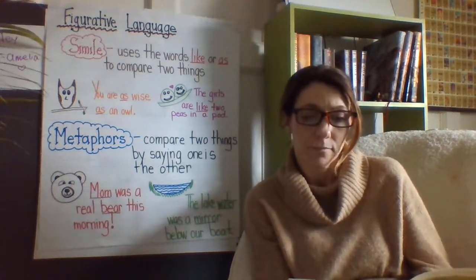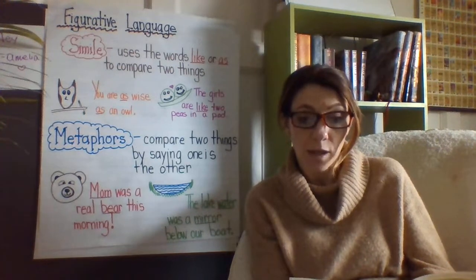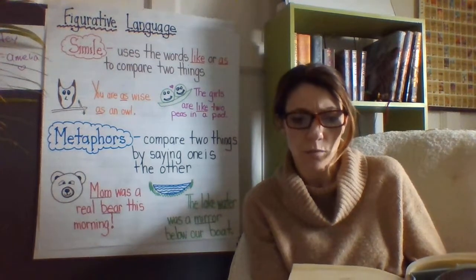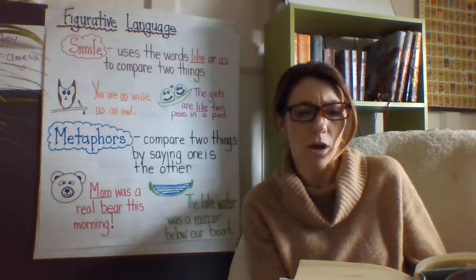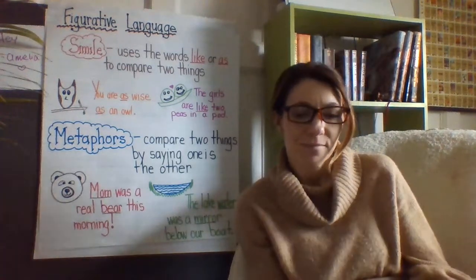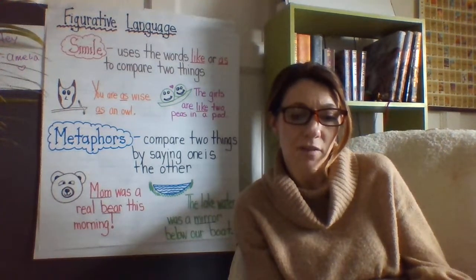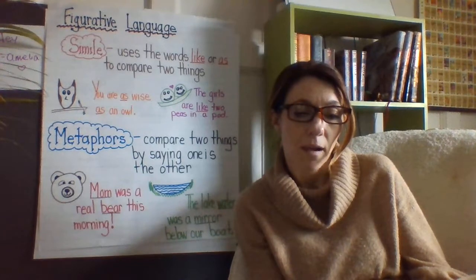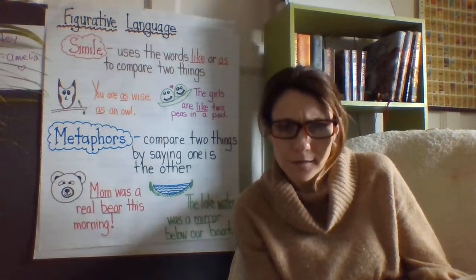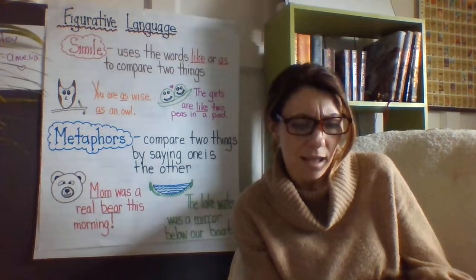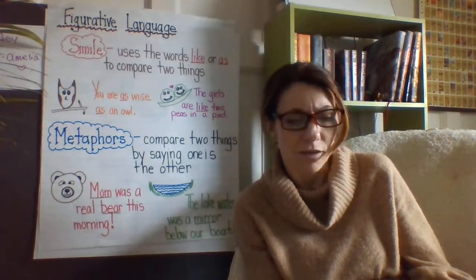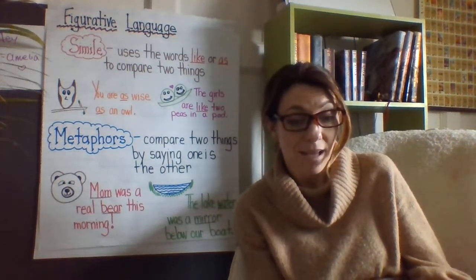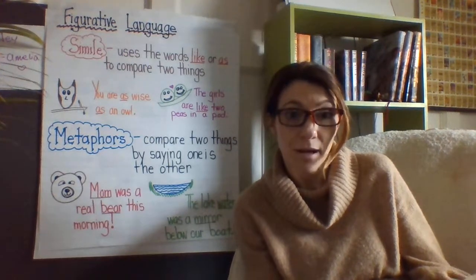'Once Stella saw a trainer hit a bull elephant with a claw stick. A bull is like a silverback — noble, contained, calm like a cobra is calm. When the claw stick caught in the bull's flesh, he tossed the trainer into the air with his trunk. The man flew like an ugly bird.' She never saw the bull again. There were a lot of similes and metaphors in that paragraph alone.